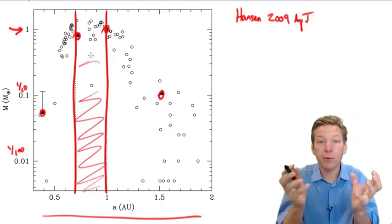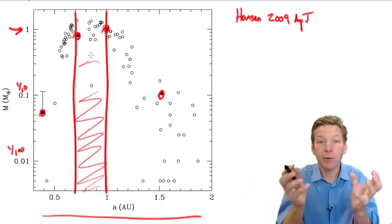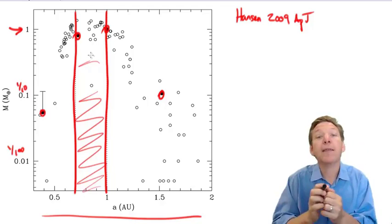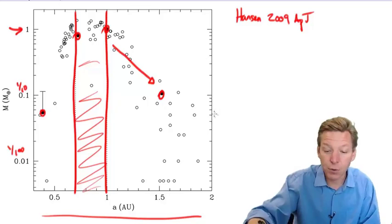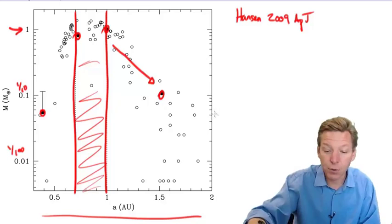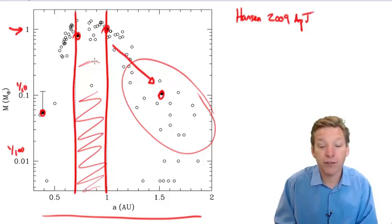And that annulus was something like 0.7 to 1 AU. If you confine all the disk into this annulus, what happens is the oligarchs grow, and when they become their isolation mass, they start to eventually gravitationally interact, and they spread out, they scatter each other around. Not only do they scatter each other around, but some of them get scattered so far out that they never interact with other oligarchs again.